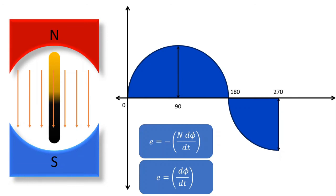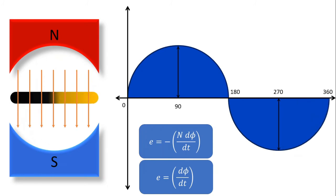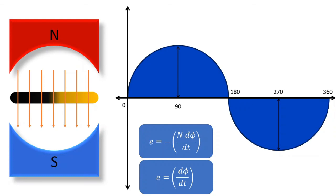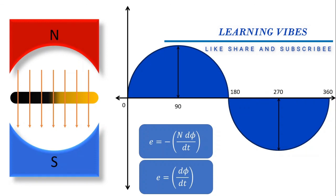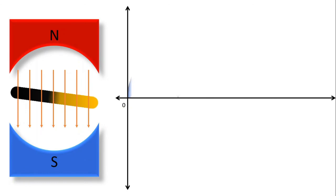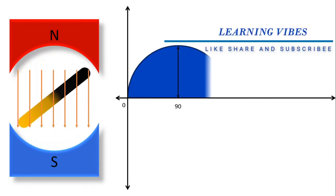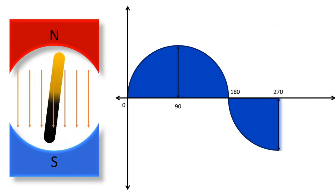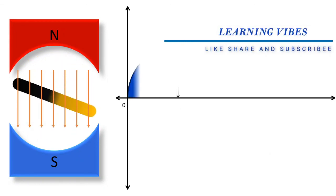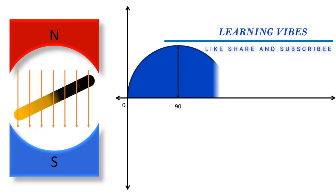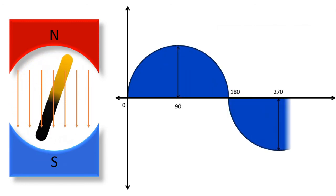If we shift the conductor further we get the remaining output voltage. At that position again the velocity is parallel to the magnetic lines of force and hence there is no induced EMF. So in a complete revolution of the conductor we get a complete 360-degree sinusoidal waveform in the output voltage. This is how a sinusoidal EMF is induced in a generator.